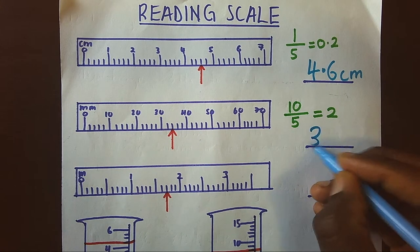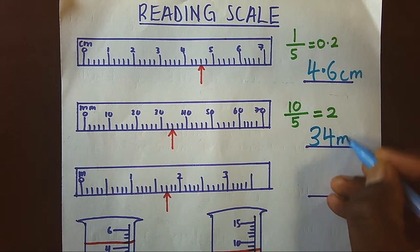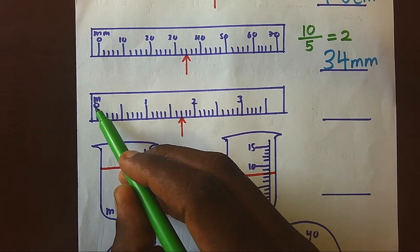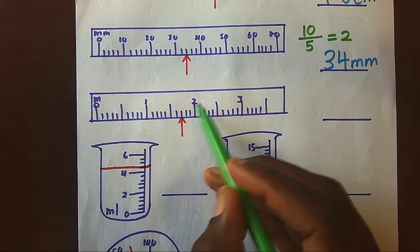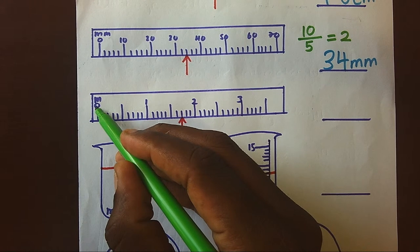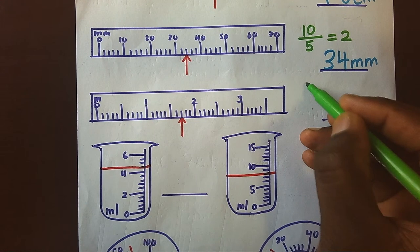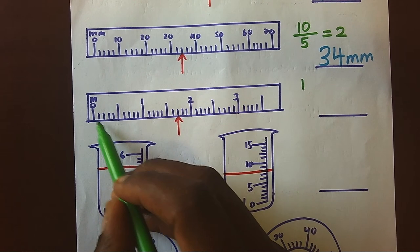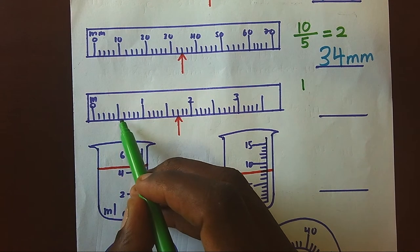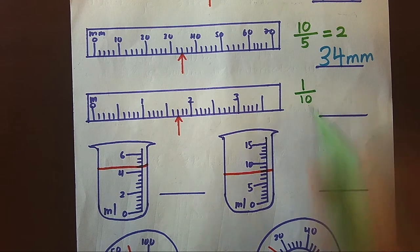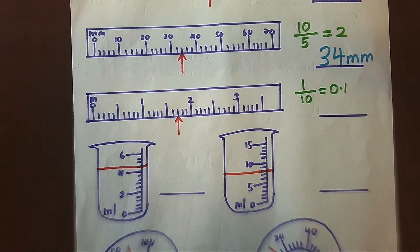Our main arrow is pointing at 30 to 34, hence our reading here will be 34 millimeters. When we look at this other example, you can see the main reading is zero, one, two, three, and so on. That means from one main reading to another main reading is one unit, and if you check the small spaces we have one, two, three, four, five, six, seven, eight, nine, ten. So we shall divide by ten, giving us 0.1 for each space.